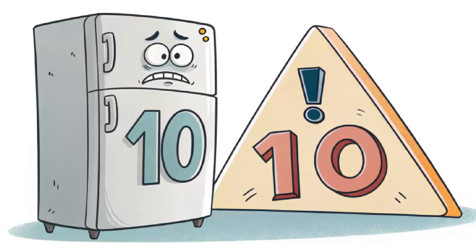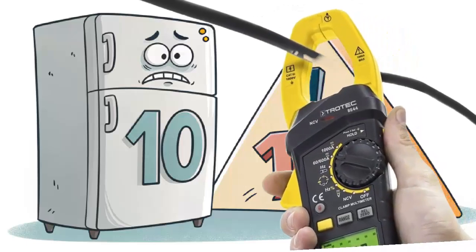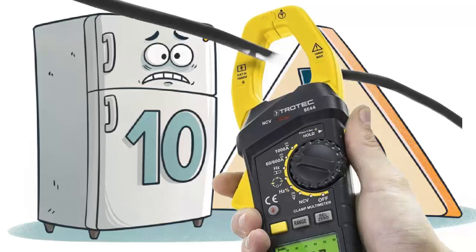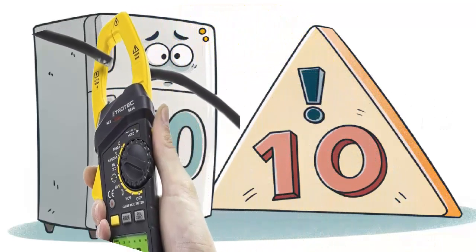3. Excessive current consumption. Measure the compressor's current draw with a clamp meter and compare it to the rating on its label. Pay attention to two values: RLA, running load amps, for normal operation and LRA, locked rotor amps, for startup.